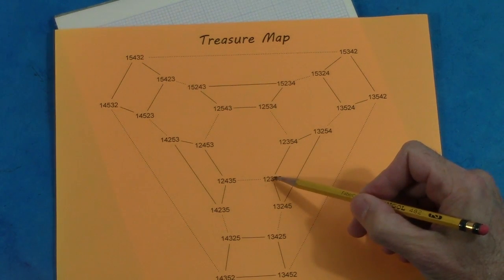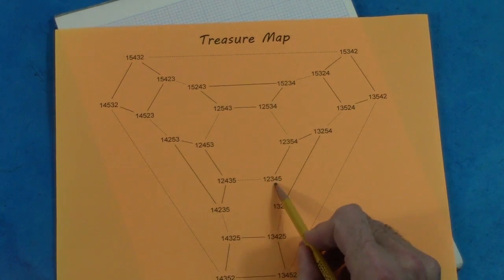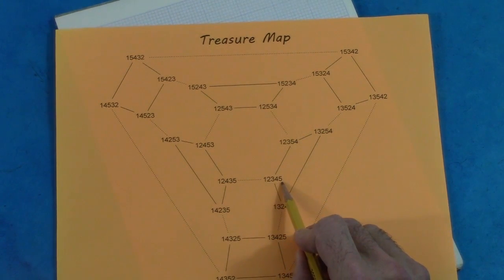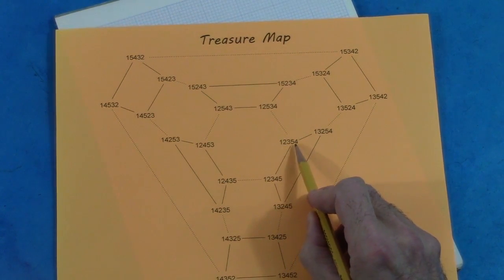Two cycles are connected here with a line if you can swap an adjacent pair to get from one to the other, like changing one two three four five to one two three five four.